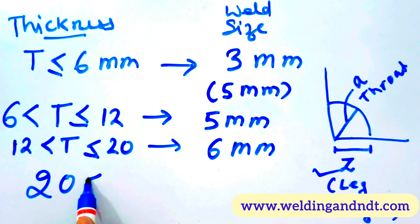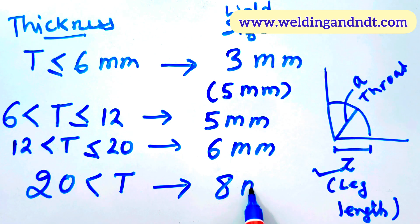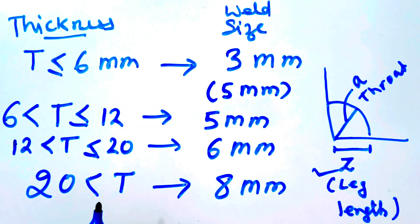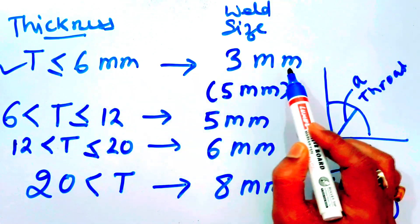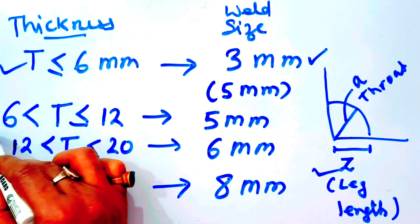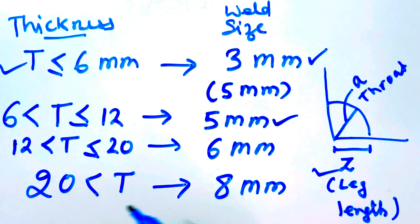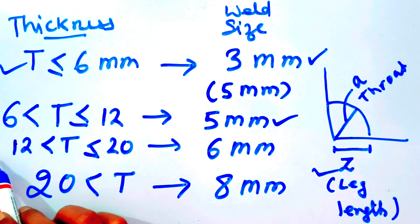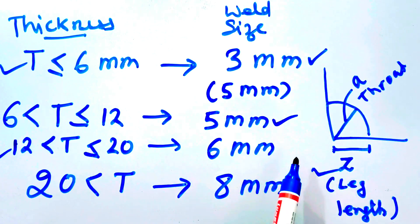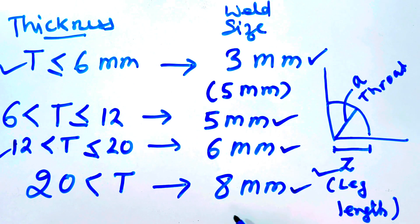The last condition: if the thickness is greater than 20 mm, then the minimum fillet weld size will be 8 mm. To summarize all four conditions: t ≤ 6 mm → 3 mm; 6 mm < t ≤ 12 mm → 5 mm; 12 mm < t ≤ 20 mm → 6 mm; t > 20 mm → 8 mm.